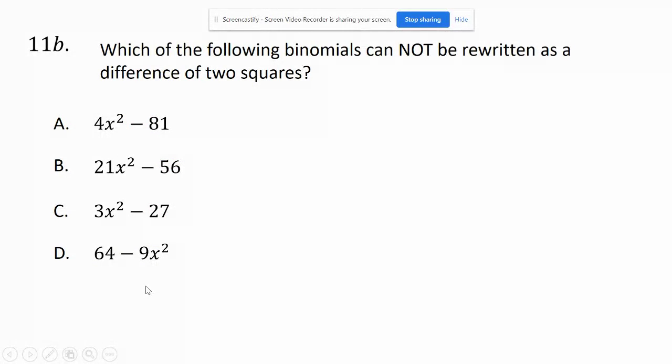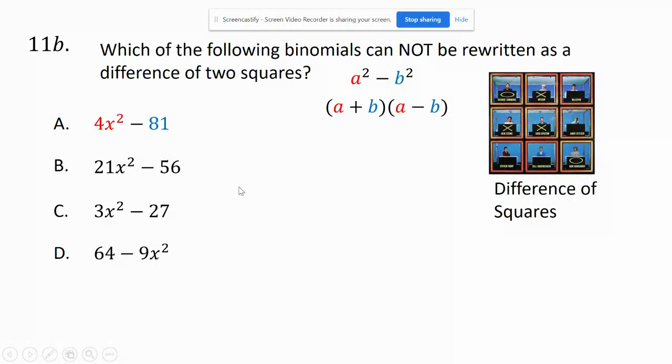Now, here we go. So which of these is not? Well, first off, notice they're all negatives, so we can't take an easy choice there. And 4 and 81 are both square rootable, so they would turn out to look like that.